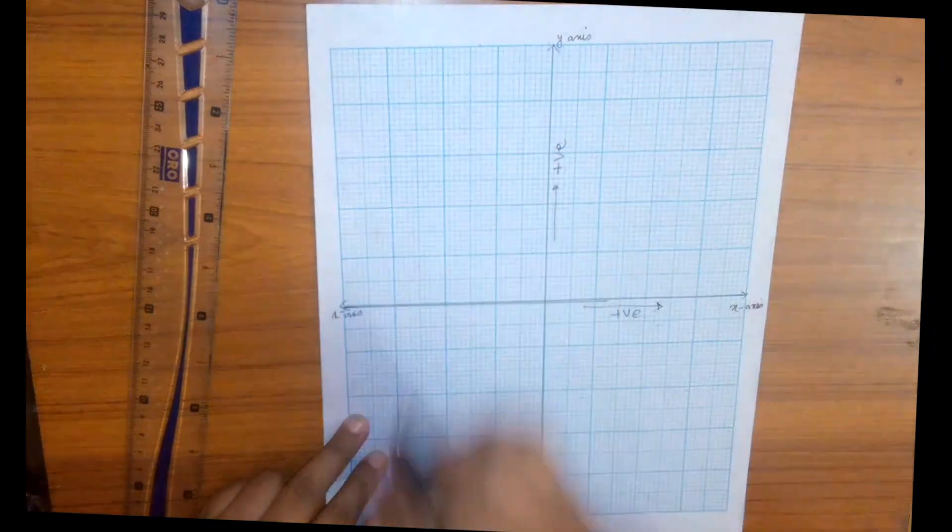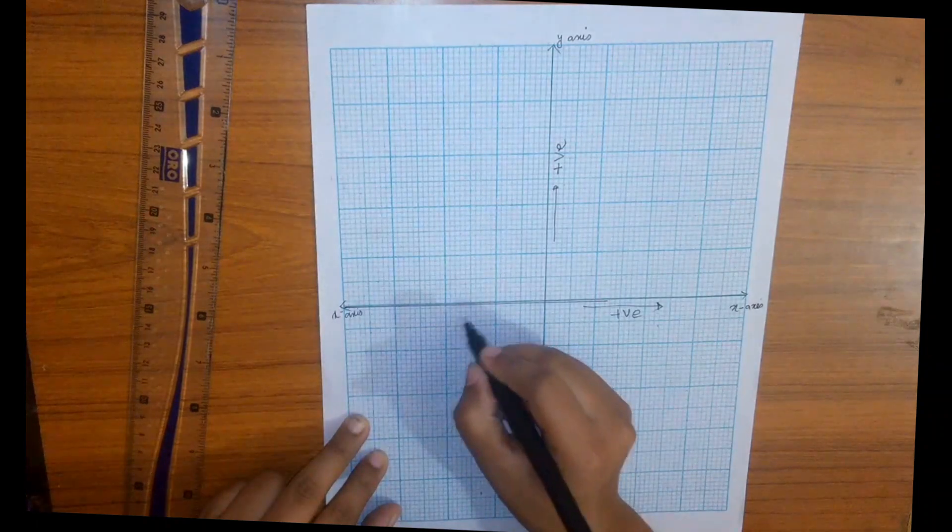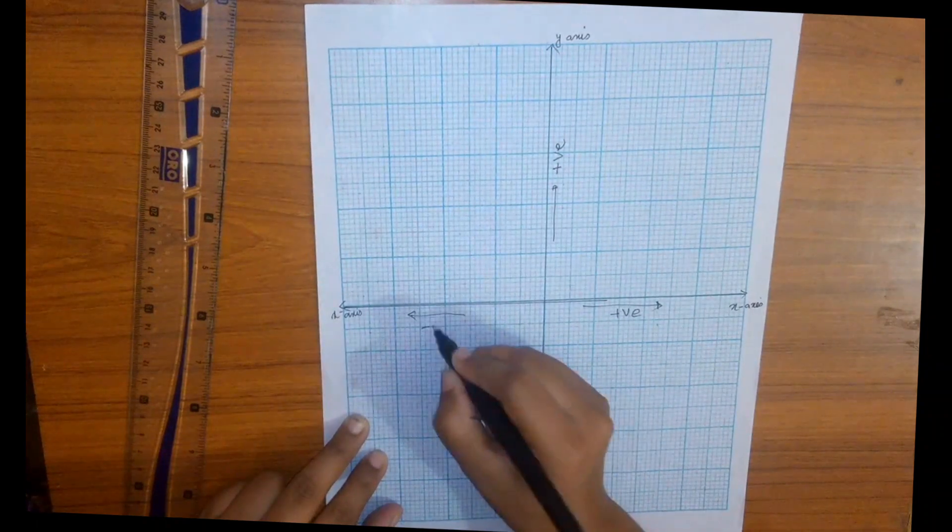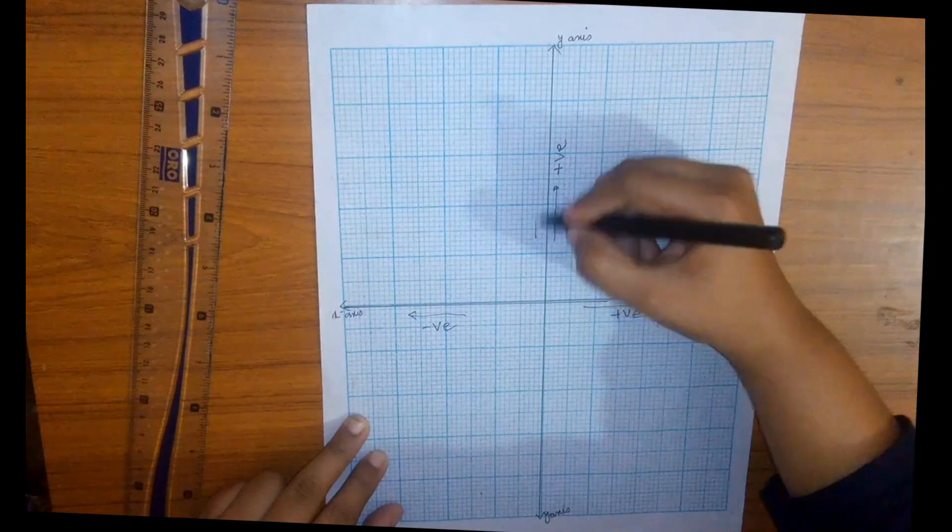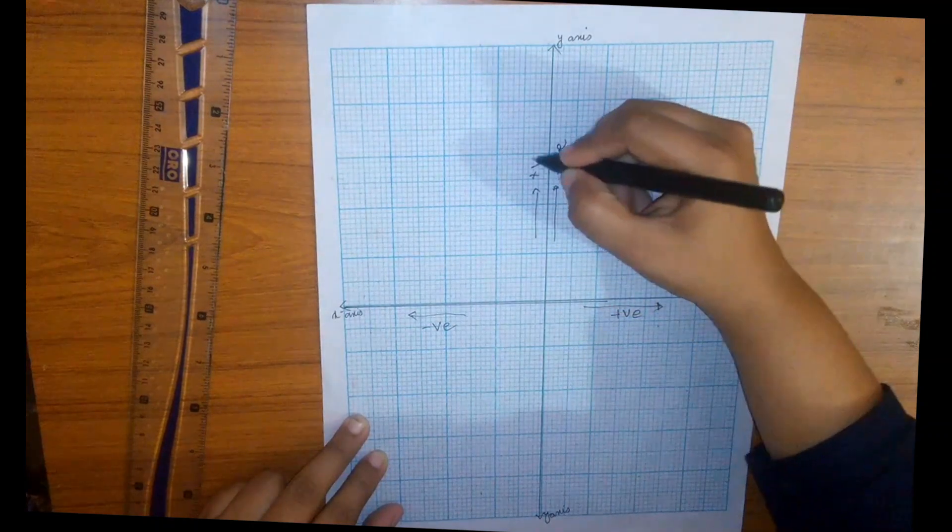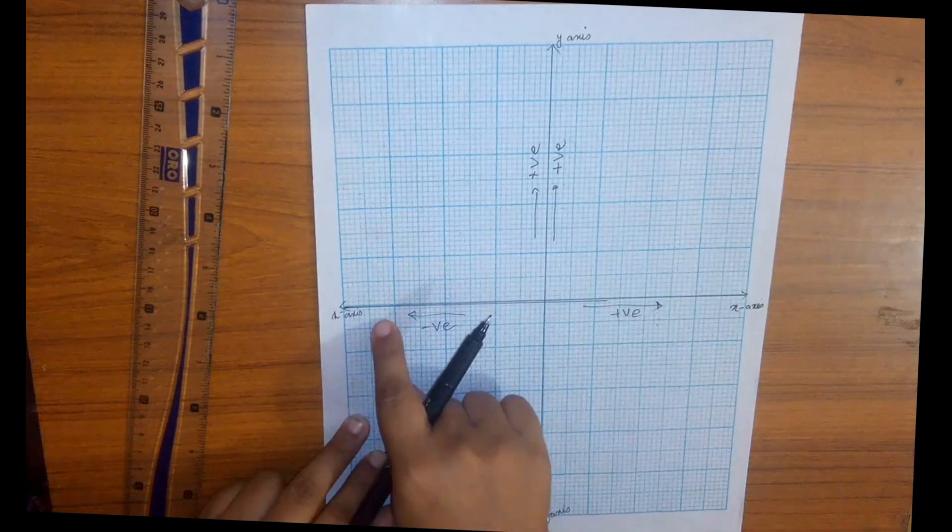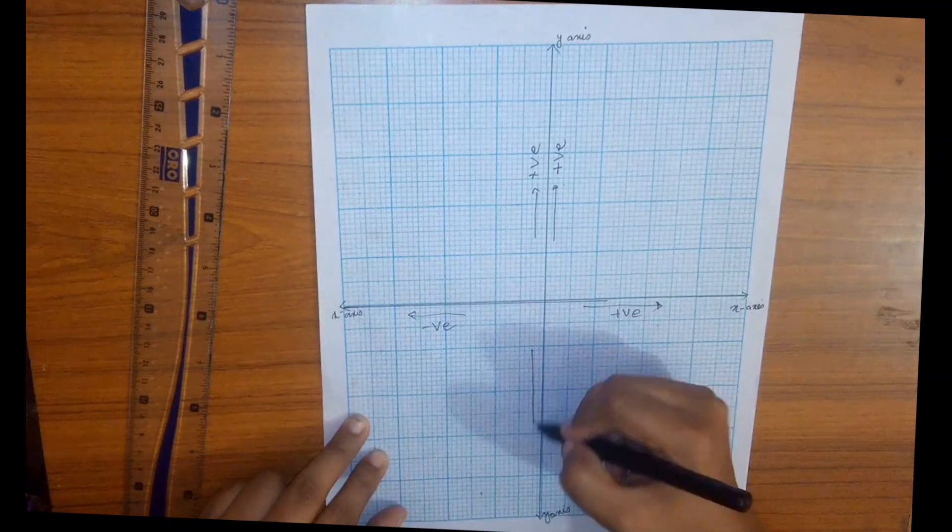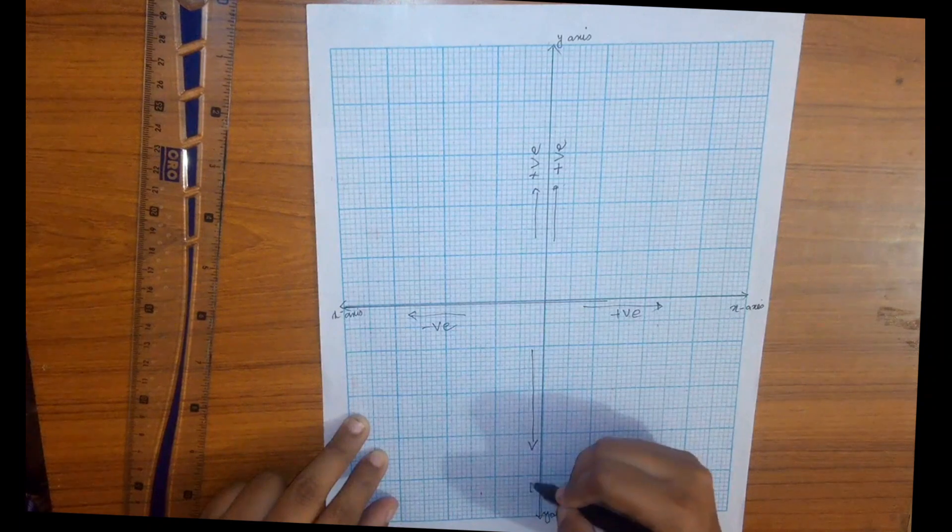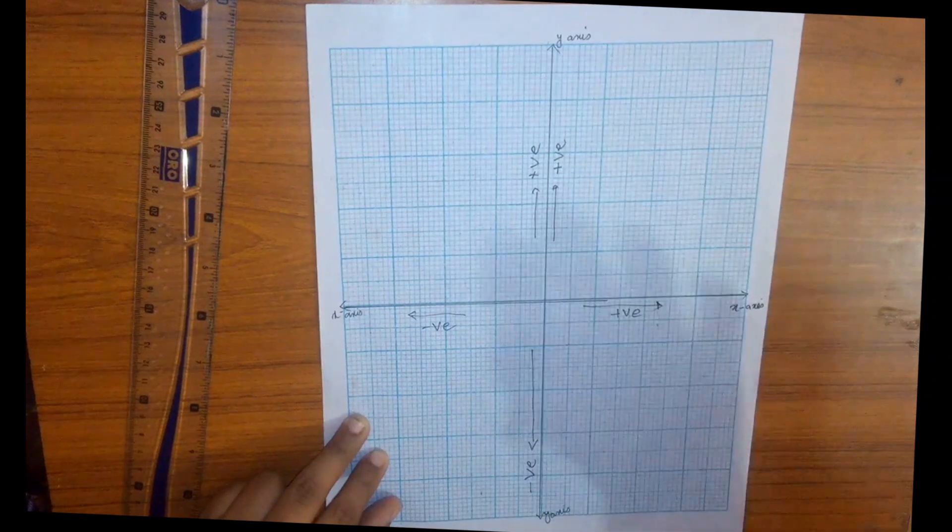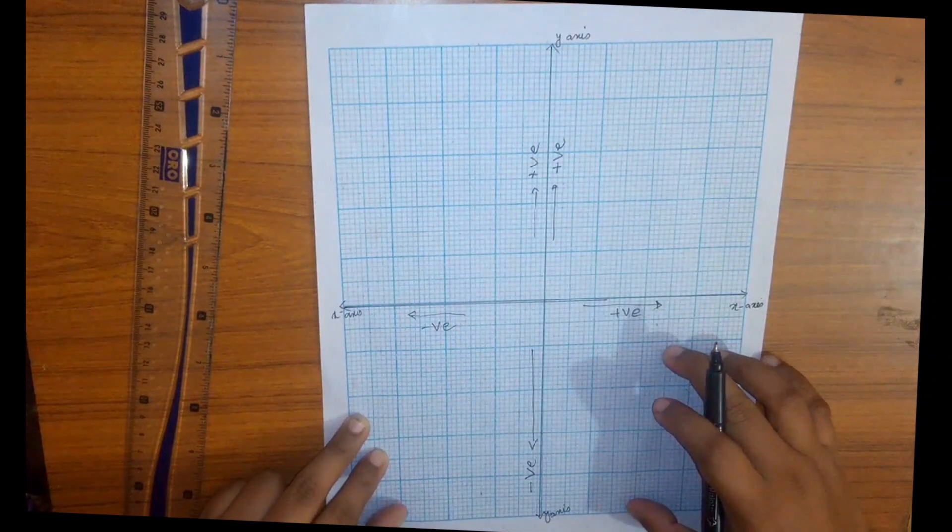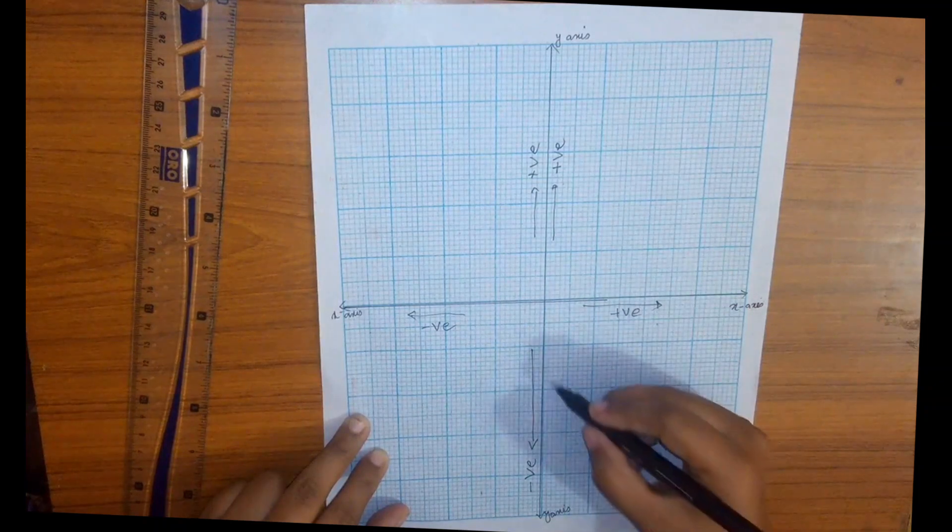In the second quadrant we have negative values for x and positive values for y. In the third quadrant we have negative values for x as well as negative values of y. In the fourth quadrant we have positive values for x but negative values for y.